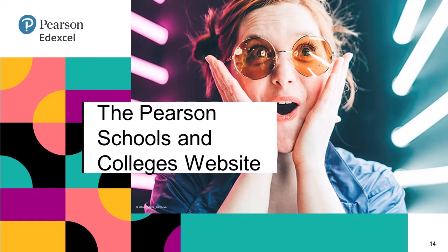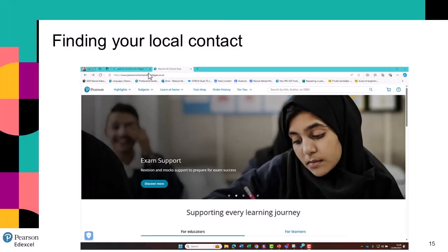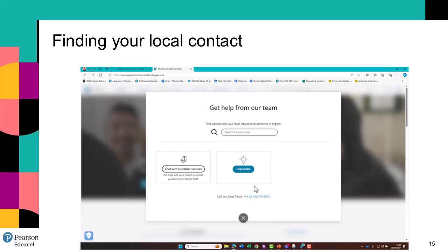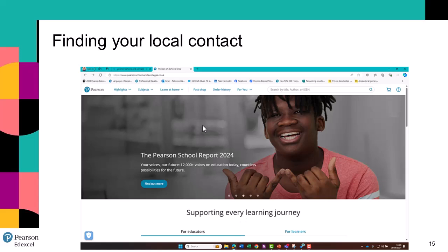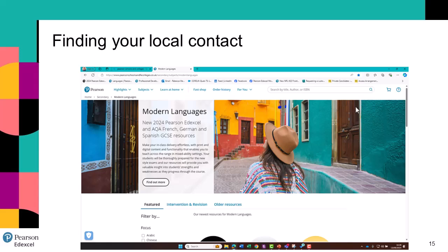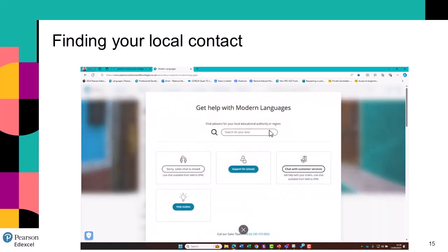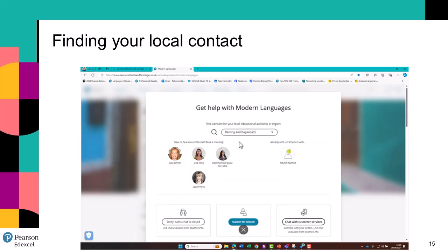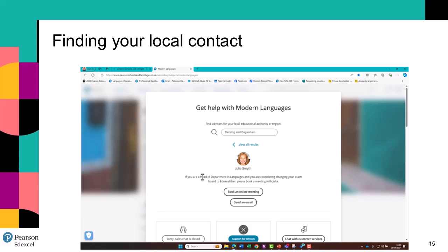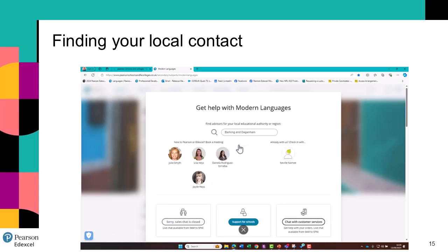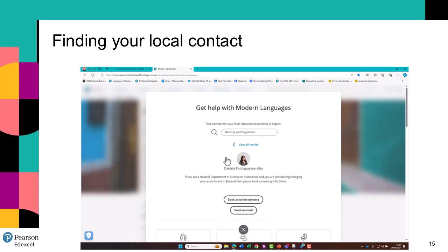The Pearson Schools and Colleges website is where you'll find our resources and the people who can support you with them. On this page, you can click on the question mark in the top right hand corner to get help from our team. We can also make this specific to languages by going to Subjects and Modern Languages, then clicking on that same question mark. There are a number of options, but we're going to look at how to find your local consultant. Searching your area — for example Barking and Dagenham — people come up, and you can click on them to find out more. For example, Julia supports languages departments and you can book an online meeting with her or send an email.